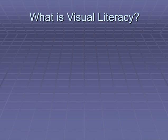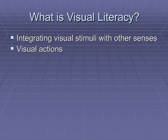What is visual literacy? Basically, visual literacy means understanding what we see and integrating the visual stimuli with our other senses. This would include such things as visual actions, objects, and symbols. By using these skills, we can communicate with others and understand and appreciate such things as the great visual masterpieces.